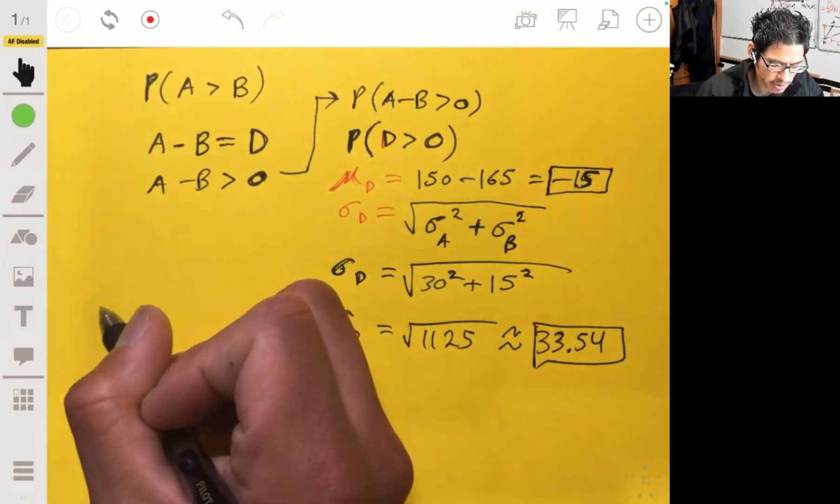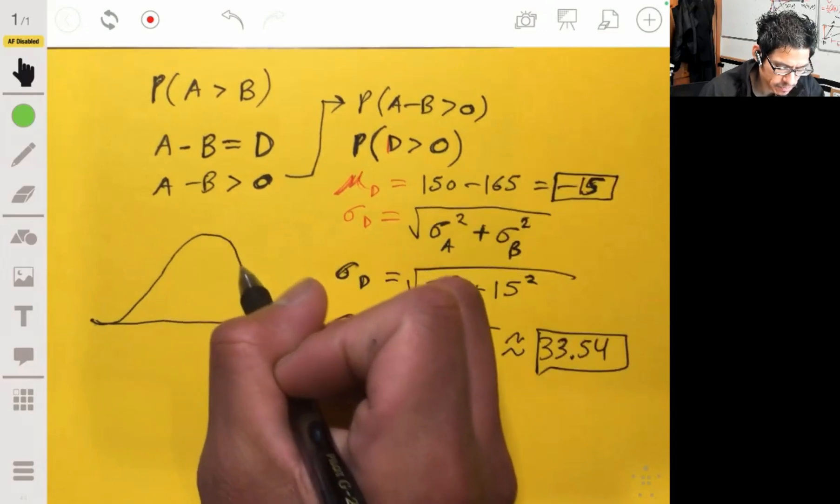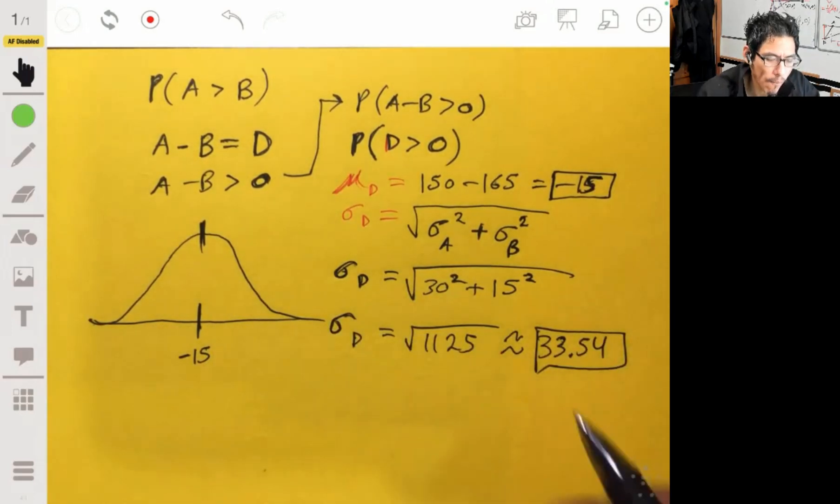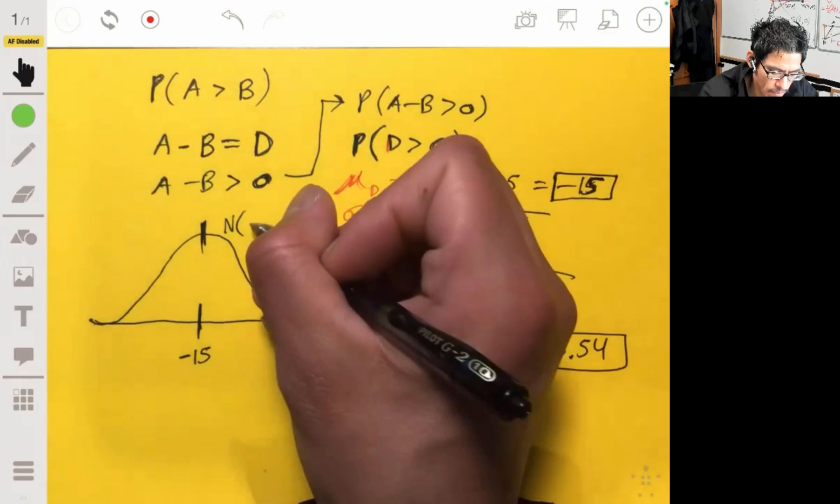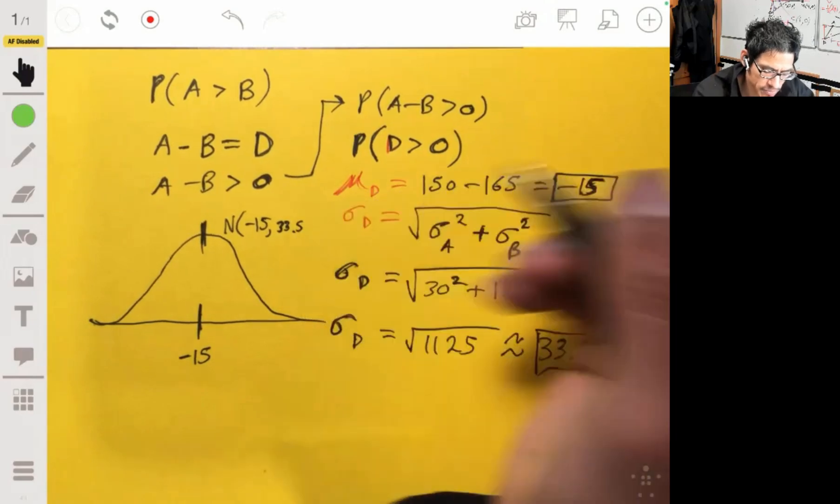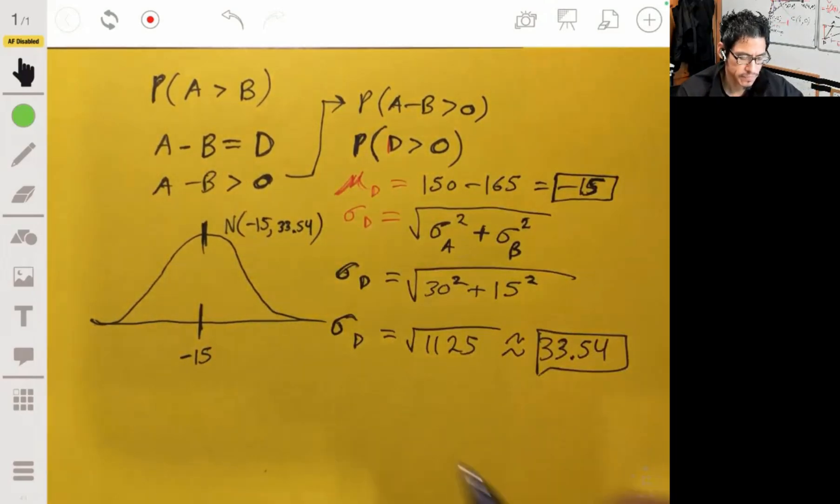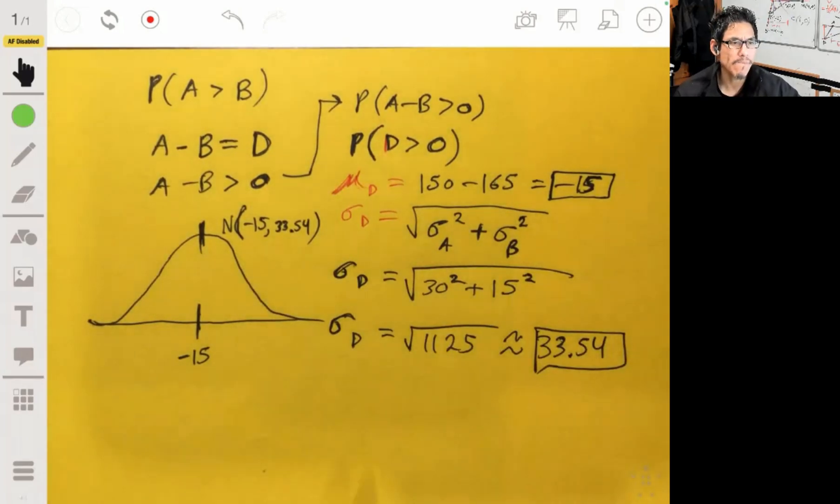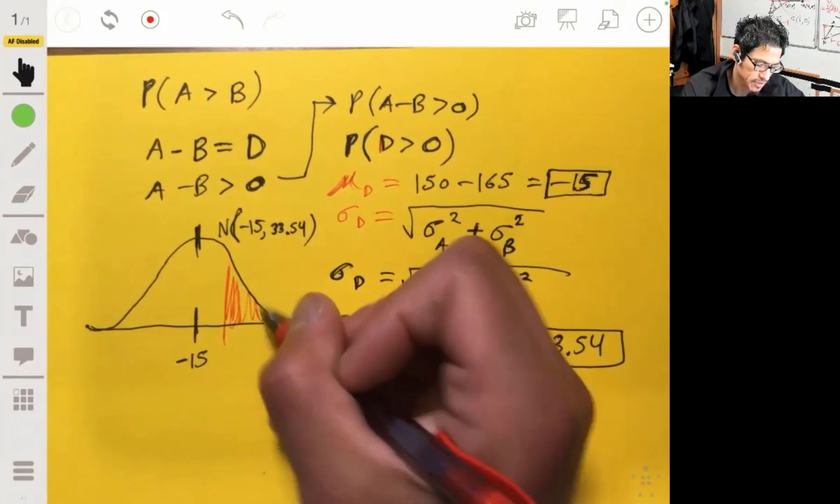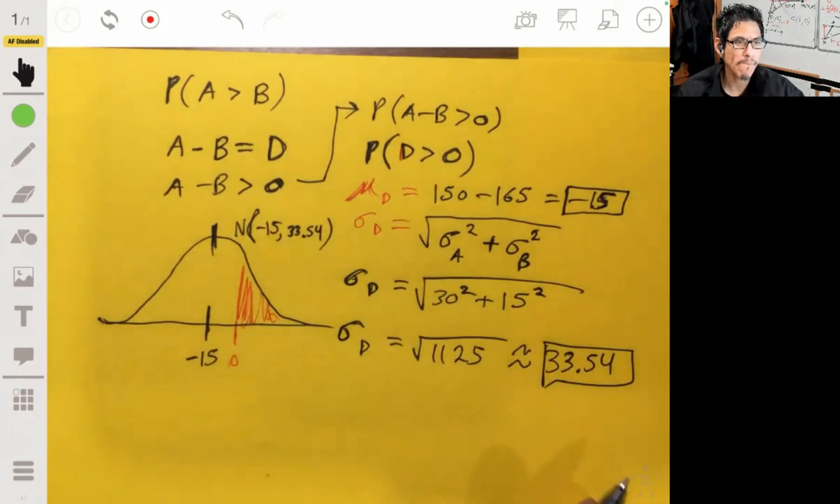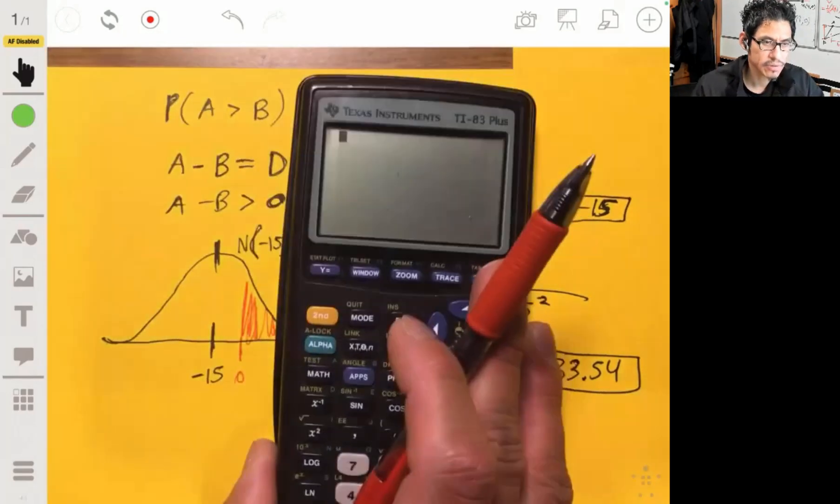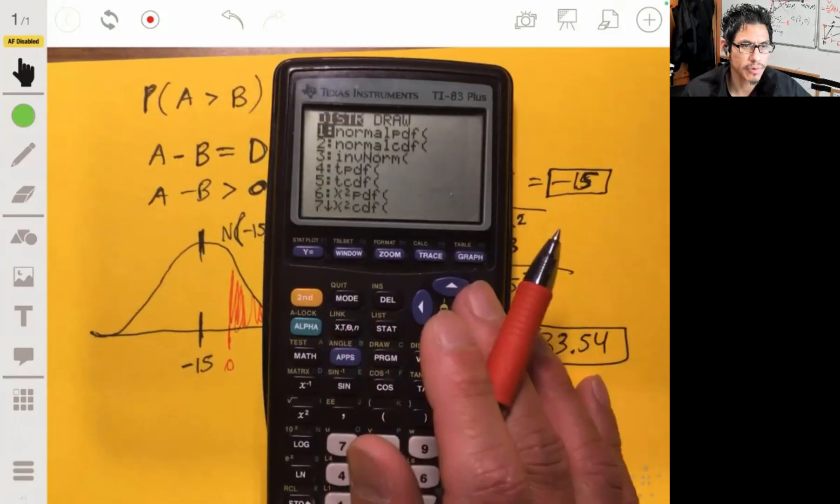Now, let's just draw a picture of what we're talking about. So that means in this new distribution, this is a distribution of D, where it's centered at negative 15. This is normal, approximately, mean of negative 15, and a standard deviation of 33.5-ish, 0.54-ish. So we want to find basically this red area there to the right of zero. And for this, you can just use your calculator. We just use this as our syntax. So go old school, go to normal CDF.